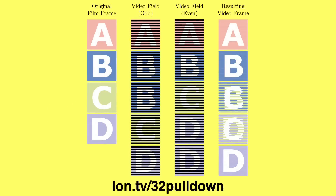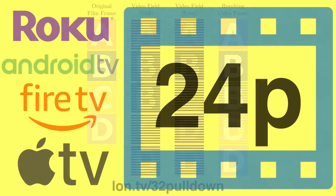The very smart people that work in the television industry came up with something called 3:2 pulldown, which basically converts 24 frames per second to 60 or 30 frames per second by very smartly mixing and mashing frames together — sometimes duplicating those frames — so that the viewer sees a smooth image even if they're watching something that was originally shot at 24 frames per second.